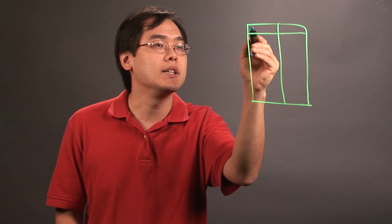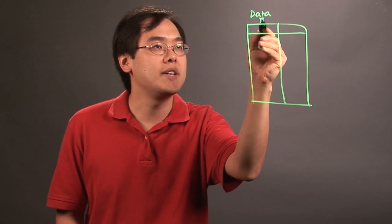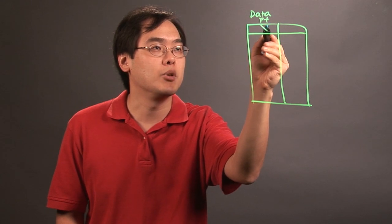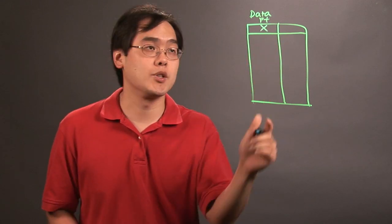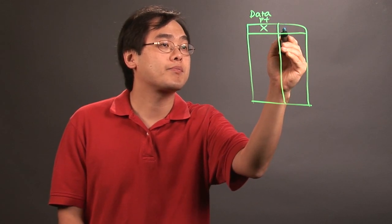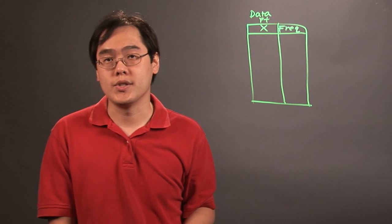The one on the left typically is the data point. Now the data point more often than not is labeled X, but it doesn't have to be, but X is more and more popularly used as a variable for data points. And then the next column is the frequency.